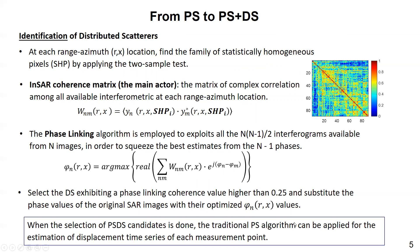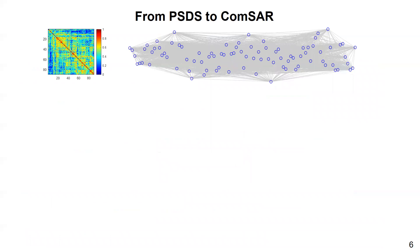Once the selection of PS and DS candidates is done, the PS algorithm can be applied for the estimation of displacement time series of each measurement point. The PS-DS technique is powerful. However, we need to calculate a full coherence matrix, which can be an issue when we have many samples or when new acquisitions become available.